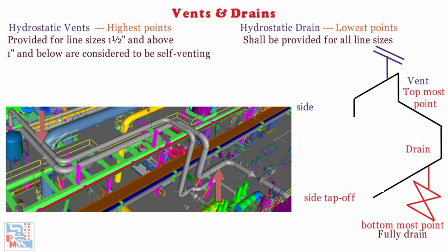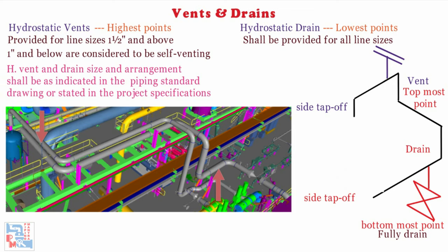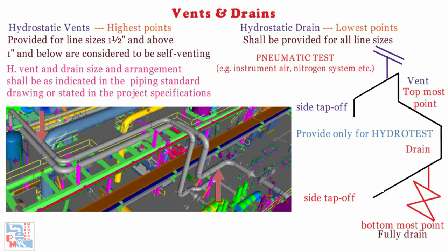The hydrostatic vent and drain sizes and arrangements shall be as indicated in the piping standard drawing or stated in the project specifications. Hydrostatic vents and drains shall be provided for the piping system subjected to hydrotest. If the piping system is subjected only to pneumatic tests — for example, instrument air, nitrogen system, etc. — then hydrotest vents and drains need not be provided.